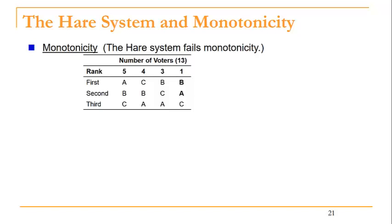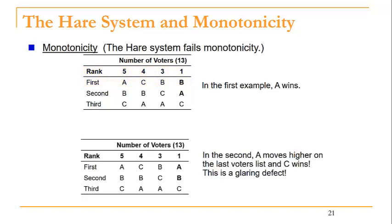Consider our very first example with 13 voters and candidates A, B, and C. Recall that candidate A won — B and C each had four first place votes, so they were eliminated and candidate A remained as our winner. Now in a second election, suppose this one single voter moves candidate A, our original winner, higher on their preference list ballot.